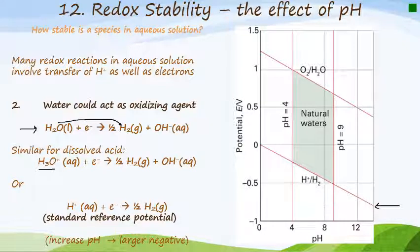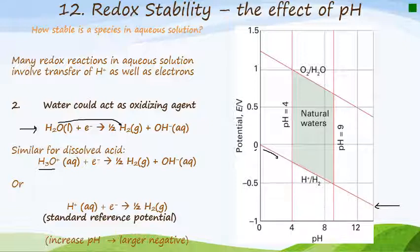If we follow the trend starting at pH zero, you will notice that the bottom red line has a negative slope going downward. The increase in pH results in a larger negative potential.